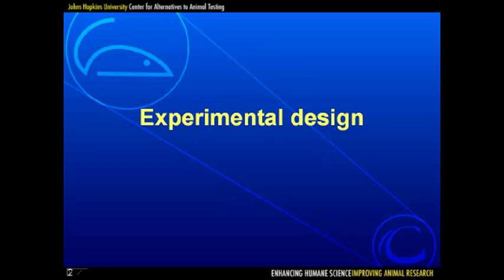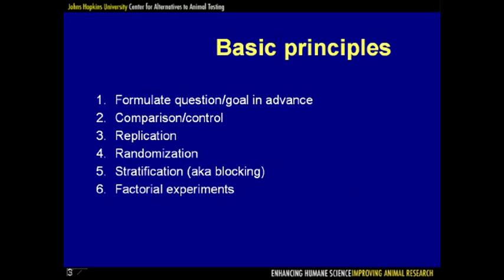The first part is on experimental design. The key principle is that one should formulate a question or goal in advance of the experiment. The worst thing to do is to get to the end of the experiment and ask, "What can I learn from these data?" It is reasonable, however, to ask, "What else can I learn from these data?" The other principles include comparison and control, replication, randomization, stratification, and factorial experiments.